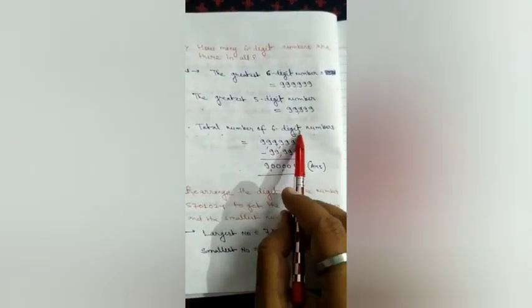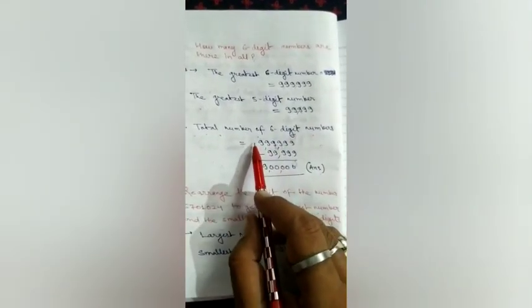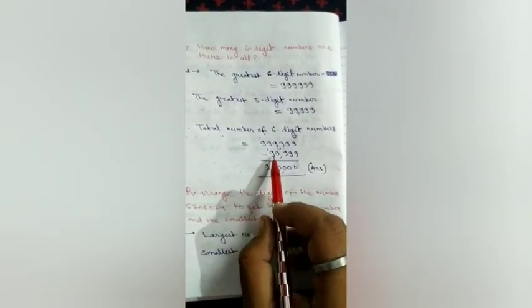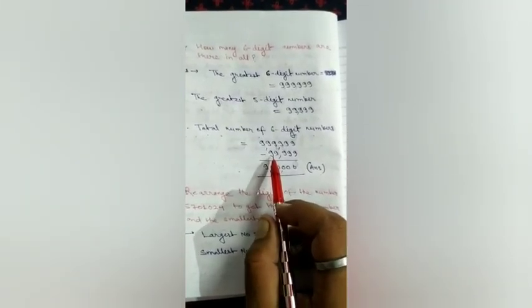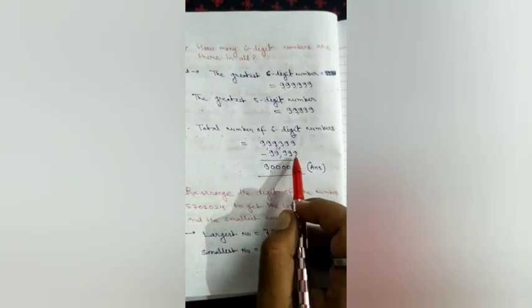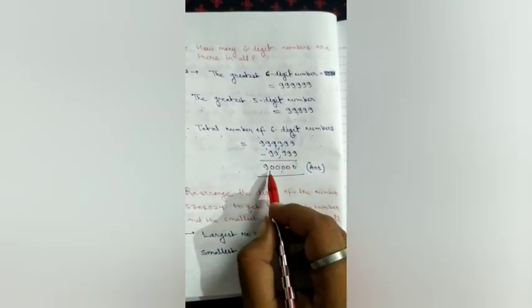So, the total number of 6 digit number you have to subtract the highest 6 digit number and from there you have to subtract the greatest 5 digit number. If you subtract, you will get how much? 9,00,000. That is your answer.